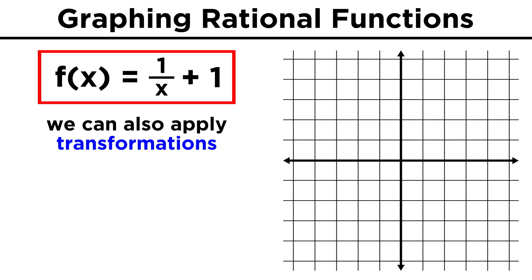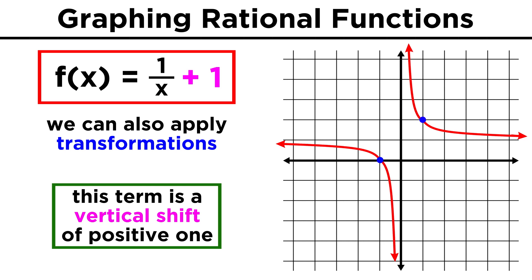Let's also quickly point out that another strategy for graphing rational functions is to use transformations when applicable. If we know what one over x looks like, then one over x plus this additional one over here means it's just the normal function with a vertical shift of one.